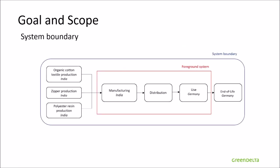Here you can see the system boundary. You have the foreground system framed in red. As you can see, it is a cradle-to-grave system — from the extraction of the raw materials and the pre-processing to the end of life of the product. In the background system, you will find upstream the fabric, the zipper, and the polyester resin production. After the extraction and pre-processing of raw materials, you will find the manufacturing of the sweater in India, then the distribution stage, the use of the product in Germany, and finally the end of life.